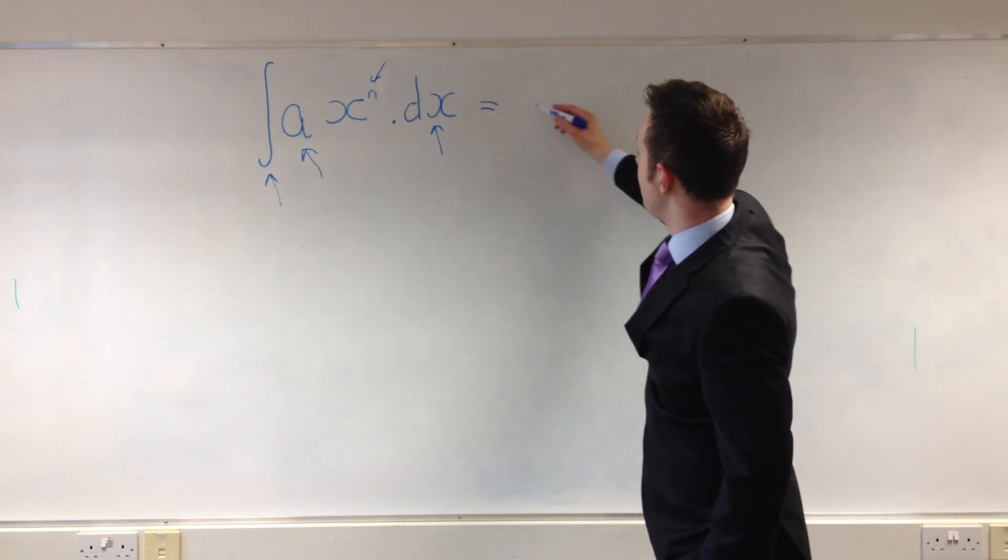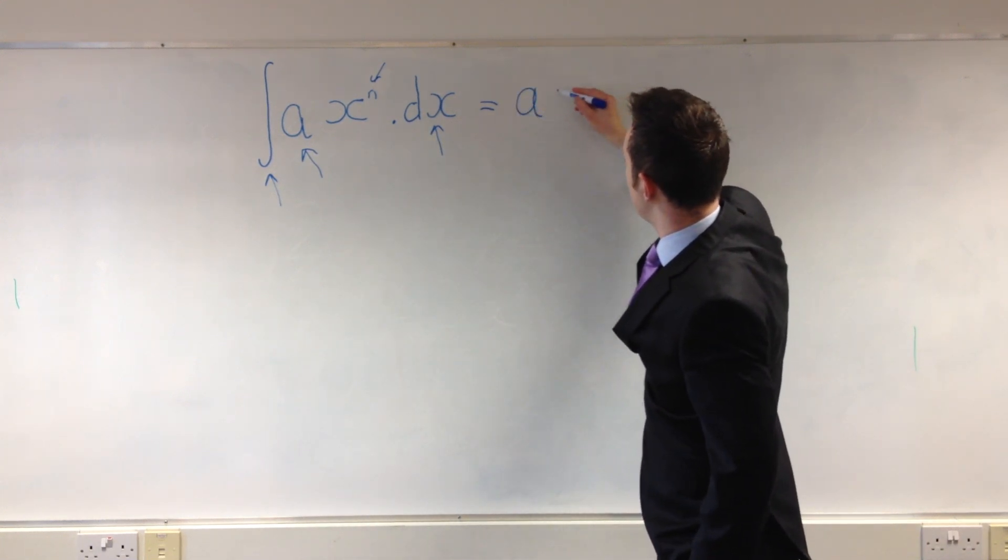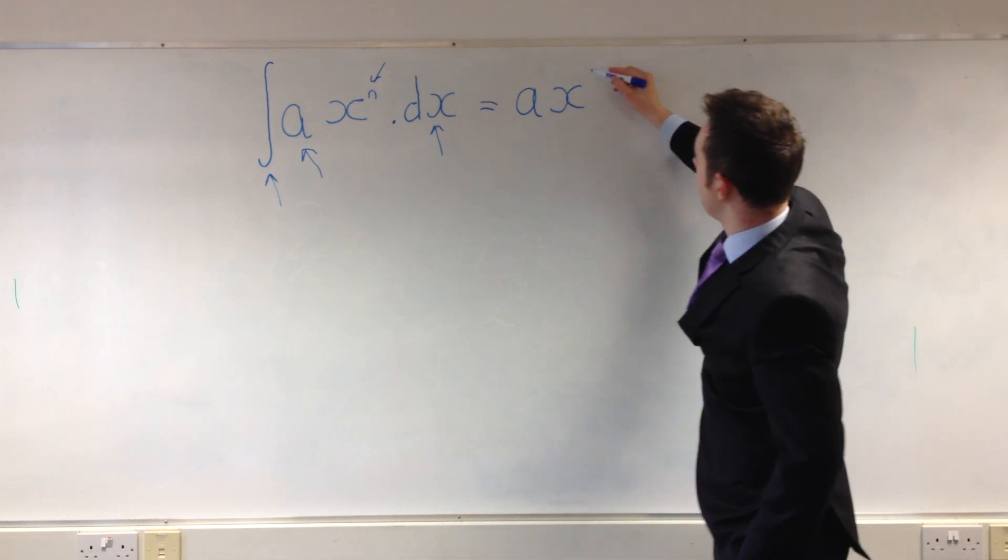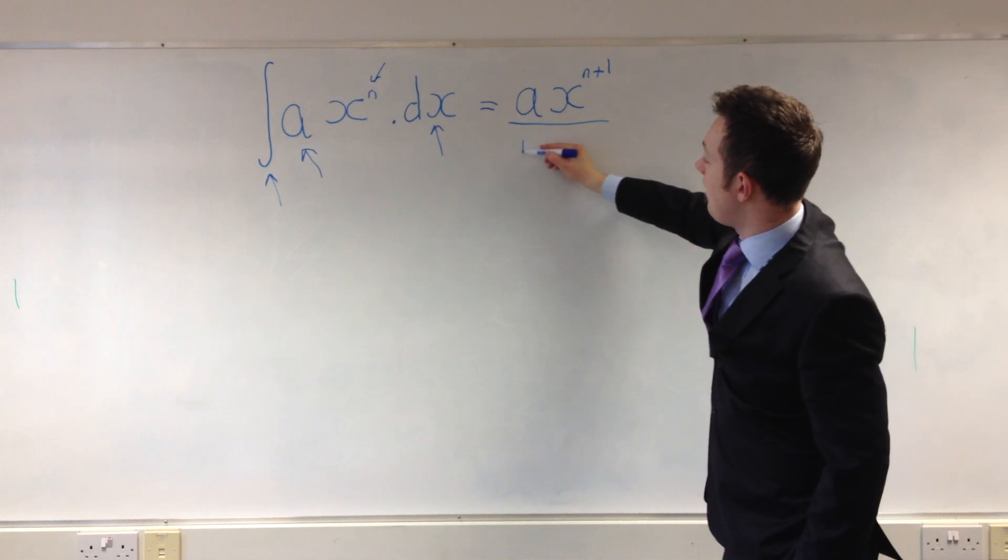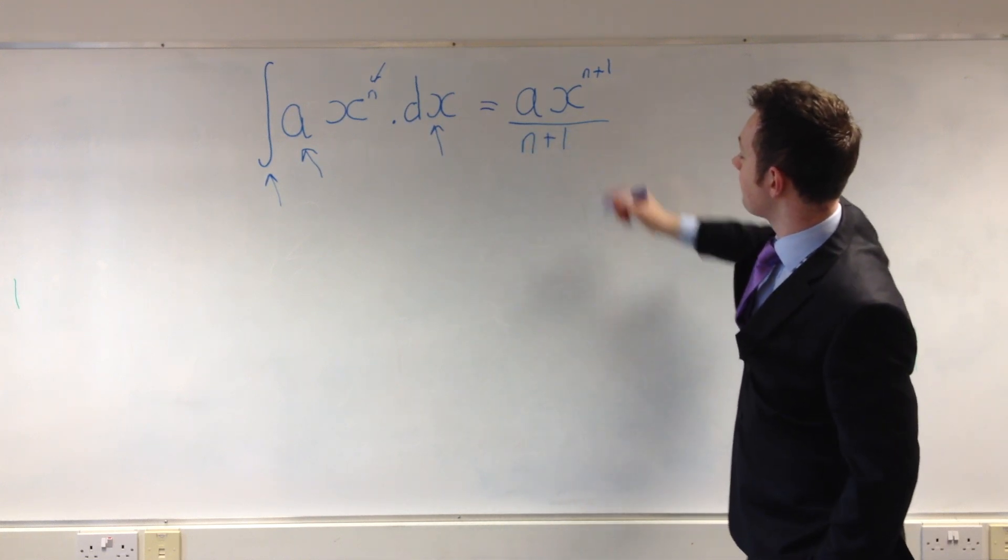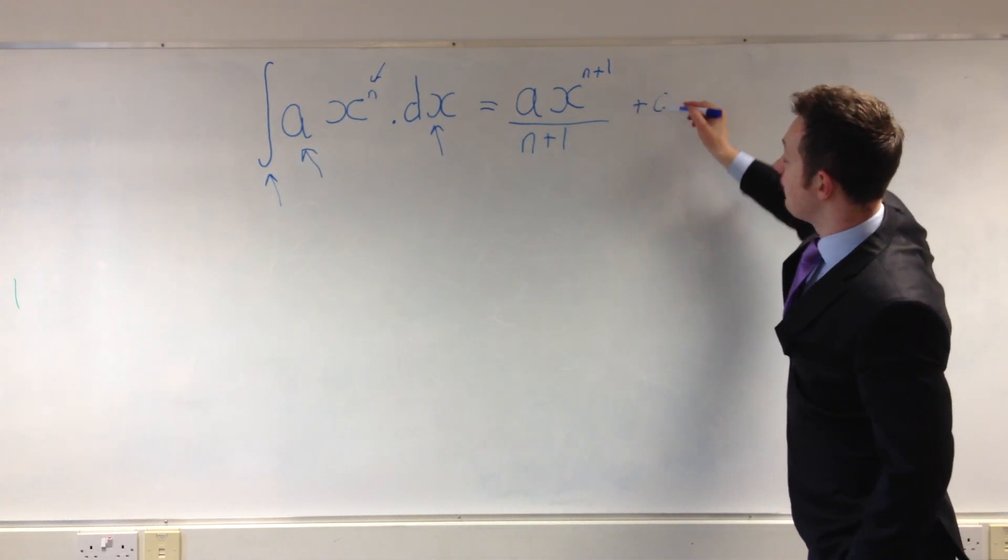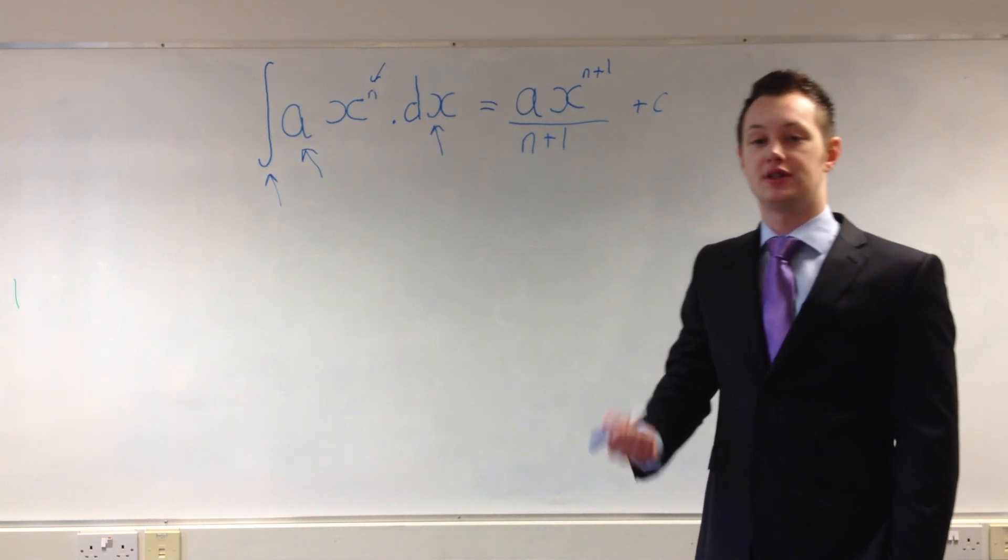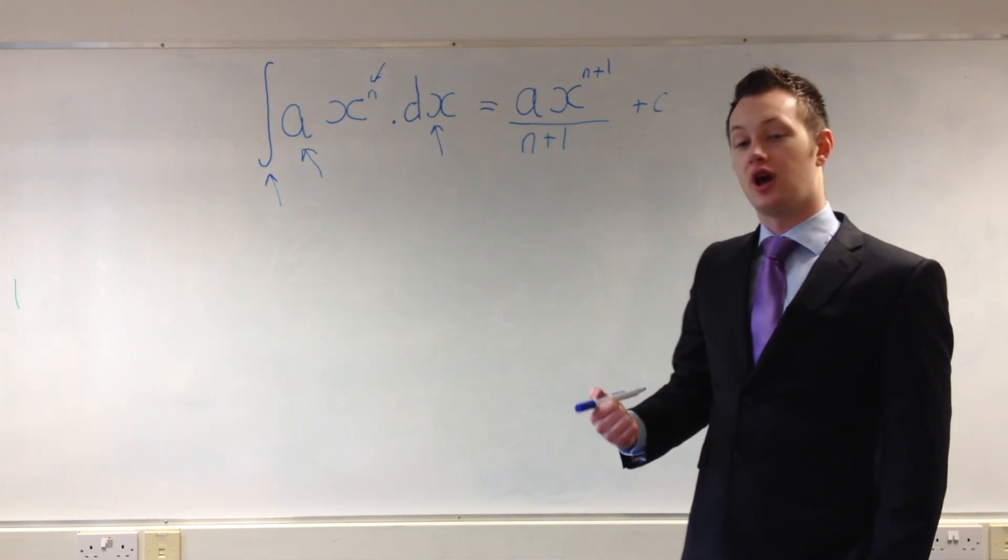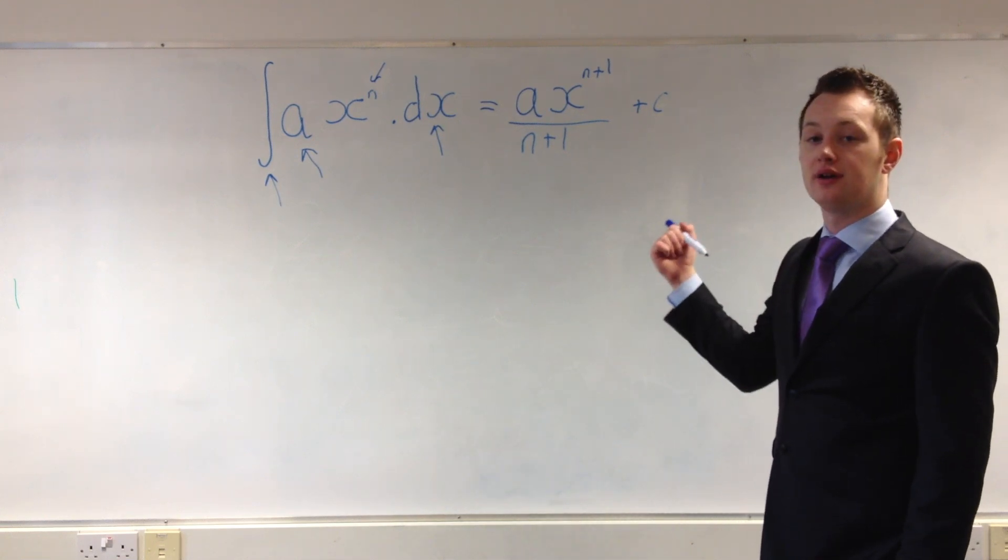Now the idea of integration is that you simply add one to the power and then you divide by this new power. You also add a plus c on the end. This is called the constant of integration and it's just used to show that we don't know a definite value for this integral.